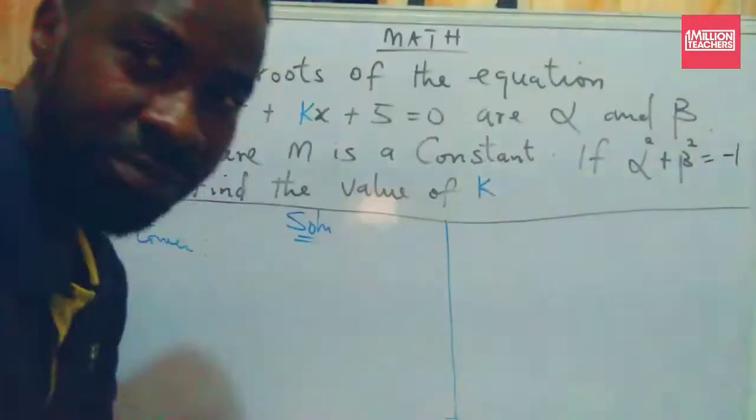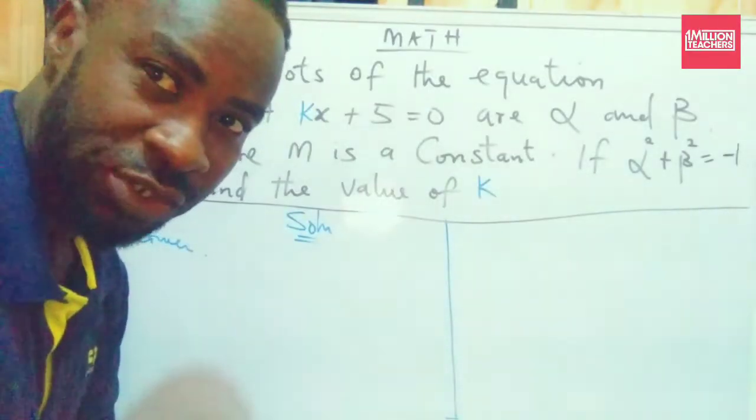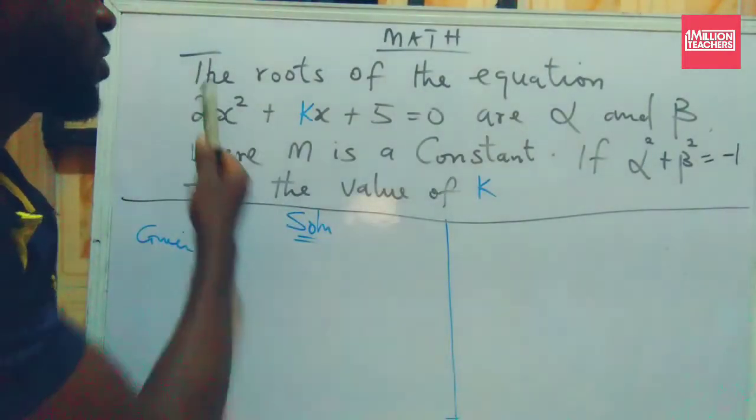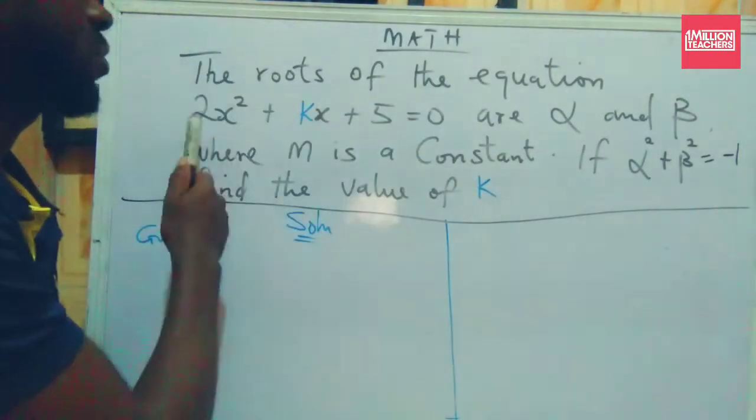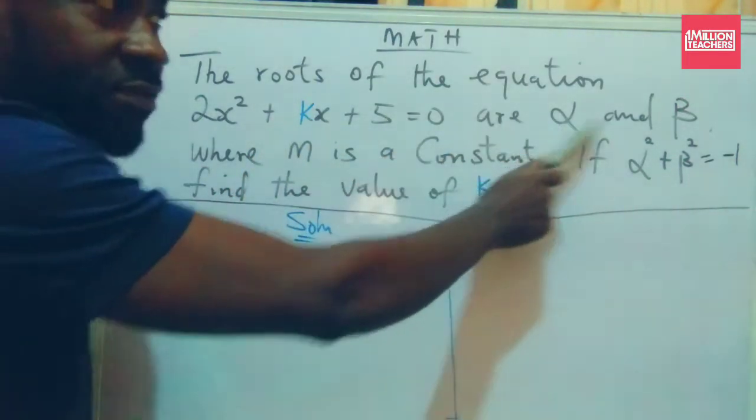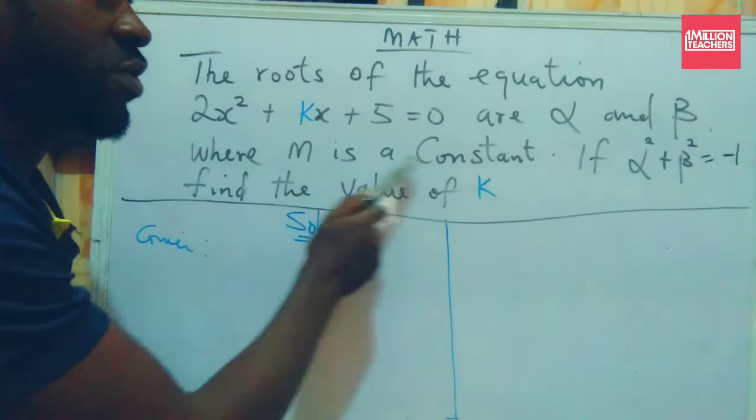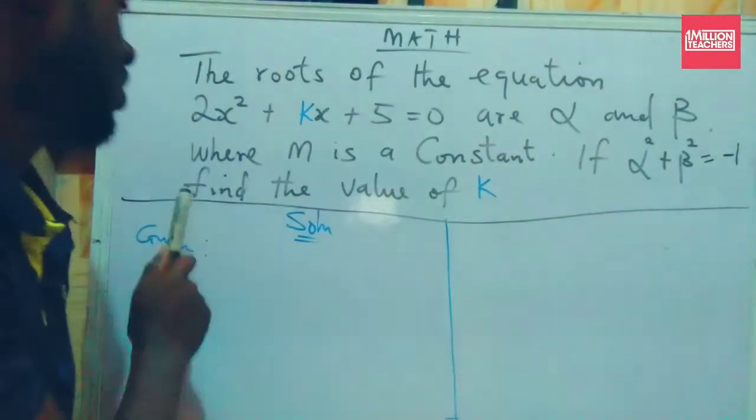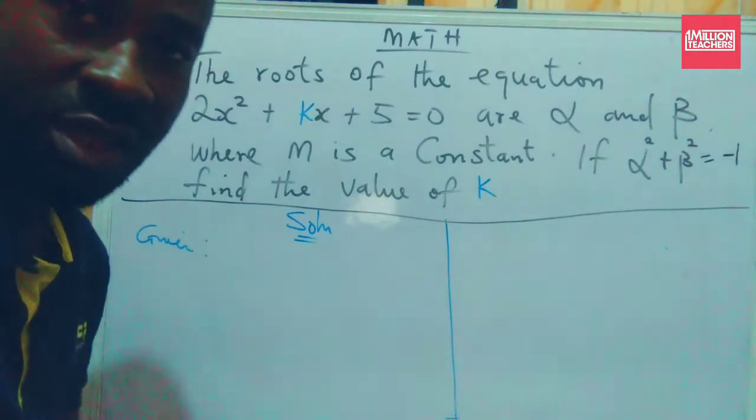Welcome to Mars with Ish. Today I have a question on the board. The roots of the equation 2x² + kx + 5 = 0 are alpha and beta, where m is a constant. If alpha² + beta² = -1, find the value of k.